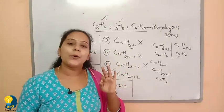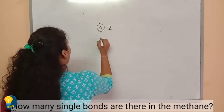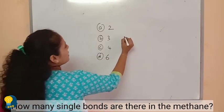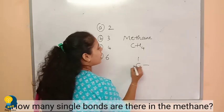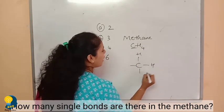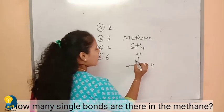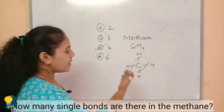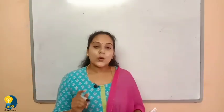The next question: how many single bonds are there in methane? Options are 2, 3, 4, and 6. Methane's molecular formula is CH4. In its structural formula, one carbon atom is surrounded by four hydrogen atoms, and everywhere there is a single bond. Counting the bonds: 1, 2, 3, and 4 — there are totally four single bonds. So option C, four, is the correct answer.